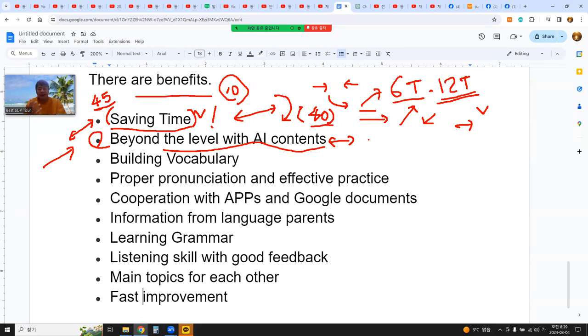So the point is online language exchange is beyond the level. You can study with any levels. When you meet high level learners or language parents, it will be good. But when you meet someone who is at the first step to learn your language, it doesn't matter because I give you some words and practice some words. I should practice pronunciation even if I know some expression in Vietnamese. I need to practice with the language parents, even if they are beginners. They are novice in Korean, but they are native speakers in Vietnamese. That is the point. So the second benefit is beyond the levels with AI contents.